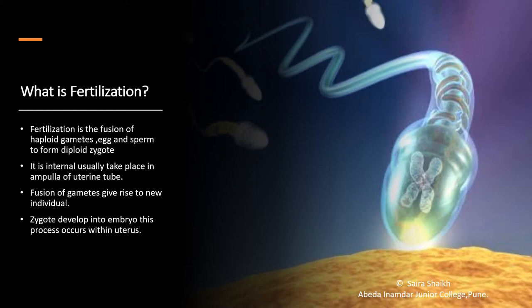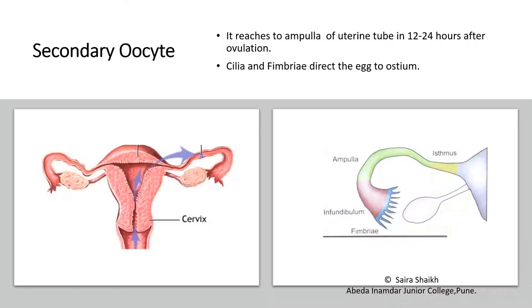After the formation of the zygote, it further develops into the embryo. This is all the process that is taking place inside the uterus, that is the mother's womb.